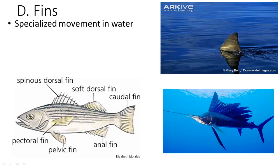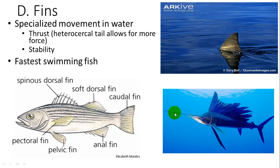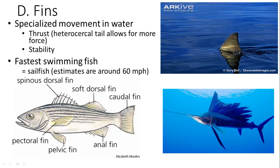Fins were our next development, allowing for specialized movement in water — they provide thrust and stability. Especially if you have specialized feeding parts in the anterior part of your body, maintaining them in a specific location requires stability, and thrust allows you to move faster in the water column. The fastest swimming fish is the sailfish, which has very specialized fins — this dorsal fin for stability — a very streamlined body shape, and a pointed nose to reduce drag. It can swim up to 60 miles per hour, which takes enormous energy and force.